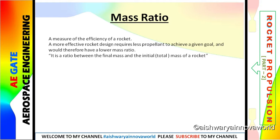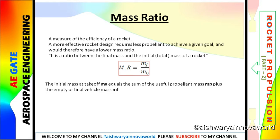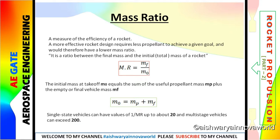In other words, mass ratio is the ratio between the final mass and the initial or total mass of a rocket. Here, Mf defines the empty mass or final mass of the vehicle, and M0 is the initial or total or takeoff mass. The total initial mass equals the sum of propellant mass plus final mass, that is Mp plus Mf. From given data, the inverse reciprocal of mass ratio for a single vehicle reaches around 20, and for multi-stage vehicles it reaches around 200.